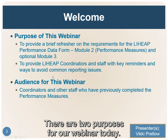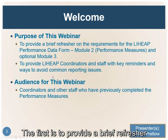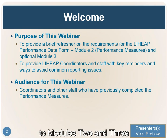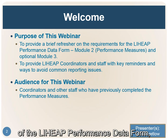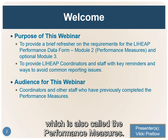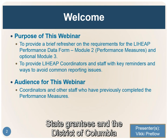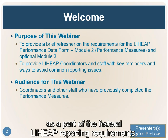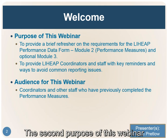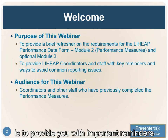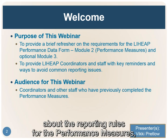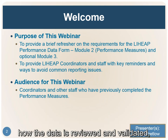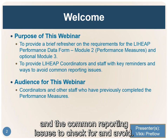There are two purposes for our webinar today. The first is to provide a brief refresher on modules two and three of the LIHEAP Performance Data Form, also called the Performance Measures. State grantees and the District of Columbia are required to complete this report each year as part of the Federal LIHEAP reporting requirements. The second purpose is to provide important reminders about the reporting rules for the Performance Measures, how the data is reviewed and validated, and the common reporting issues to check for and avoid.